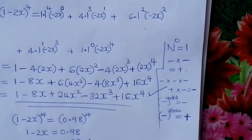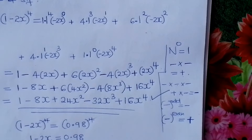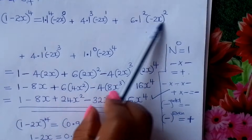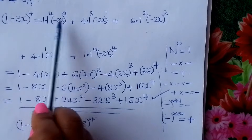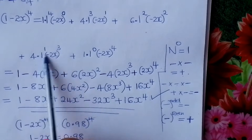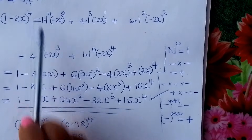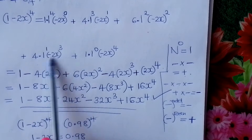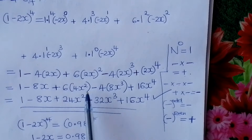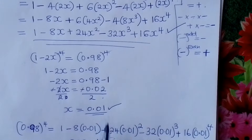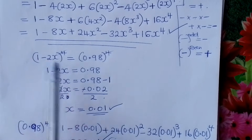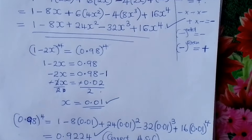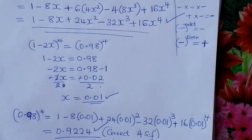Go and practice on binomial expansion — it is normally tested in exams. Remember: the first term takes the highest power decreasing to 0, the second term starts at power 0 increasing to the highest power, then fix your coefficients from Pascal's triangle, simplify, find your x by equating, substitute, and get your answer. God bless you. Go and practice.